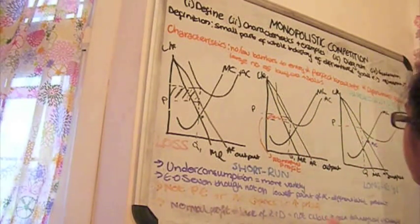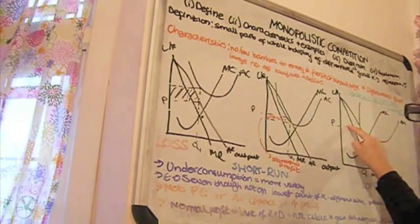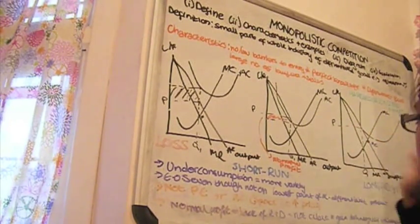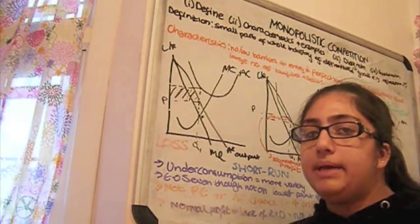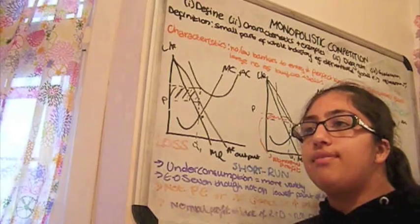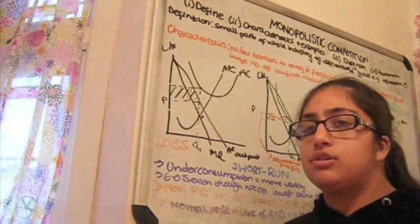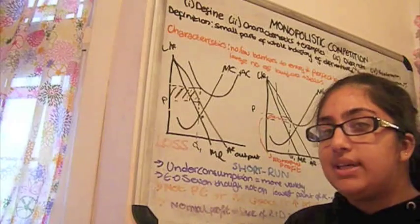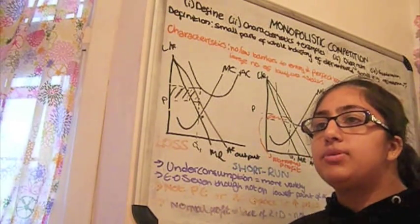They're not productively efficient, MC does not equal AC at the price. They're not allocatively efficient. And one disadvantage would be that they can take advantage of the fact that their chicken soup is not like any other chicken soup. They might be able to increase prices slightly. However, remember they won't be able to do this too much because they only make a small part of a large market.